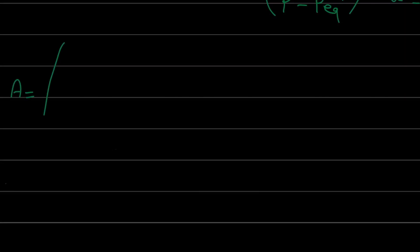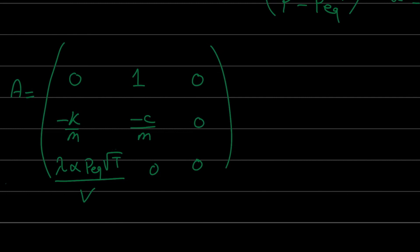If we calculate by hand the expression of A, we can find it by the following matrix. It depends on k, m, c, lambda, alpha, T, and V. And the same thing for B, we can find the expression of B.